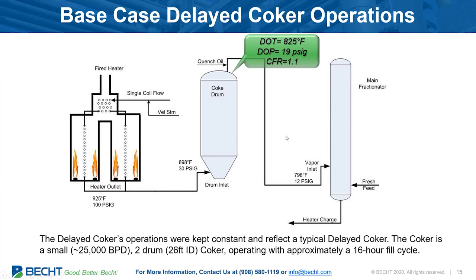The delayed coker itself was a small coker — less than 25,000 BPD — with two drums of 26-foot diameter, fitting this refinery model with a 16-hour cycle, which is very typical. The drum overhead temperature was 825°F, a common overhead temperature. Drum pressure was 19 pounds per square inch, also very common, with a recycle of 10% or a CFR of 1.1. These operating conditions were very typical. It's not a large coker, and that's probably going to influence the economics to a large degree.